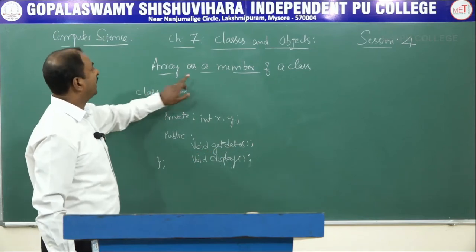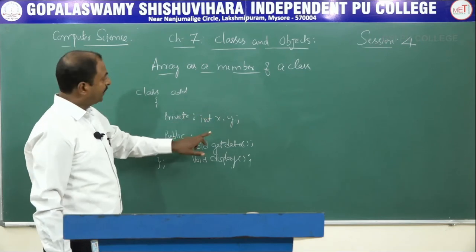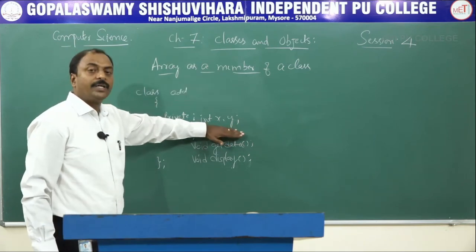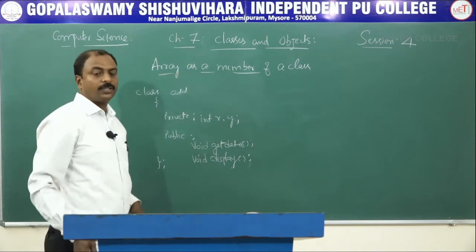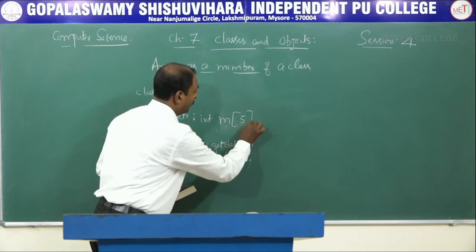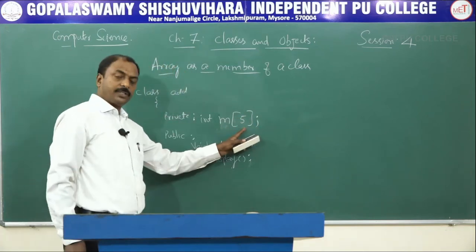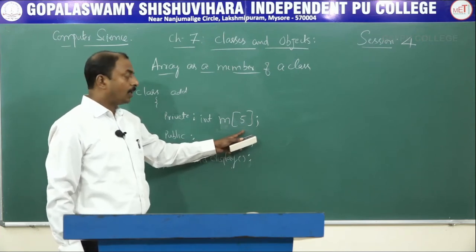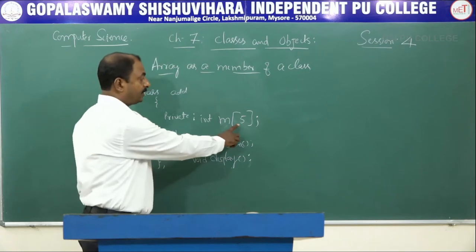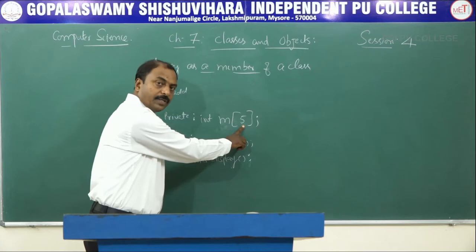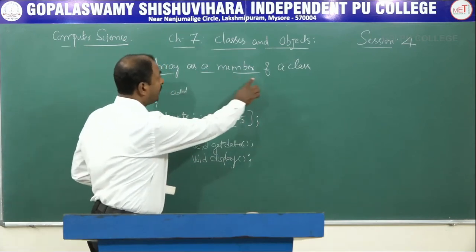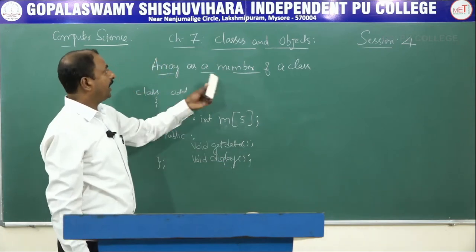What is the meaning of 'Array as a member of a class'? In this example, x and y are declared as data members. But if instead I declare an array — for example, int m[5] — that is the meaning of Array as a member of a class. An array is a group of elements of similar data types under one name. Here, m is the array name and 5 is the array subscript or index.